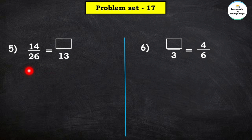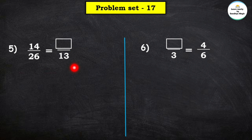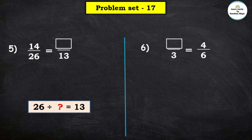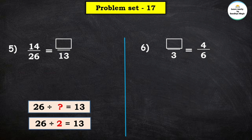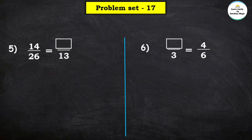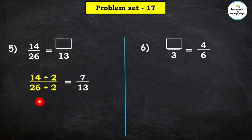Next: 14 upon 26 equals blank upon 13. The denominator 13 is smaller than 26, so we use division. 26 divided by which number equals 13? 26 divided by 2 equals 13 — since 13 twos are 26. So we divide both numerator 14 and denominator 26 by 2: 2 sevens are 14 and 26 divided by 2 is 13. Therefore 7 upon 13 is the equivalent fraction of 14 upon 26.